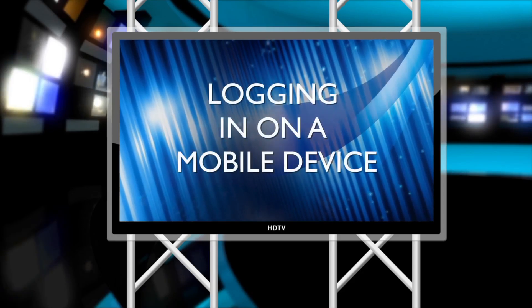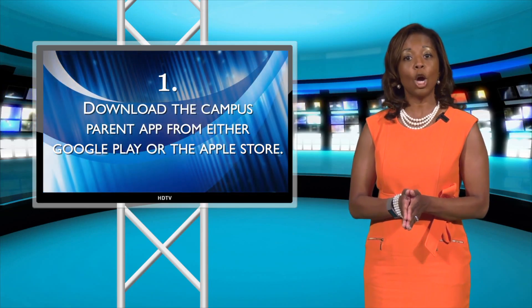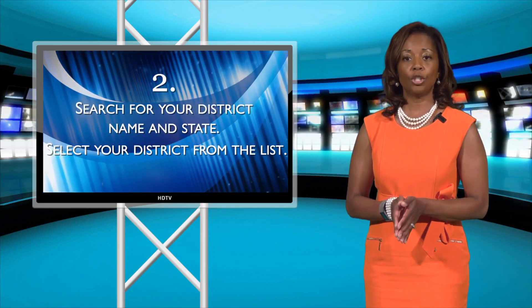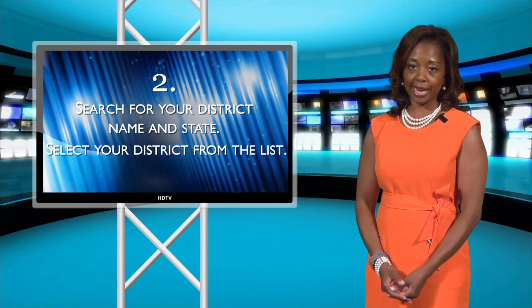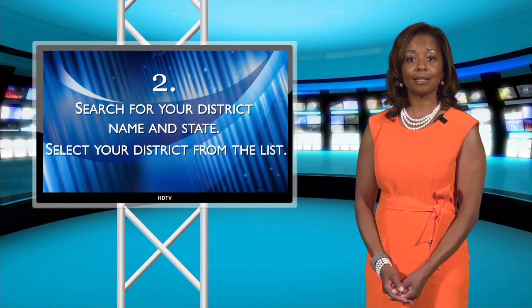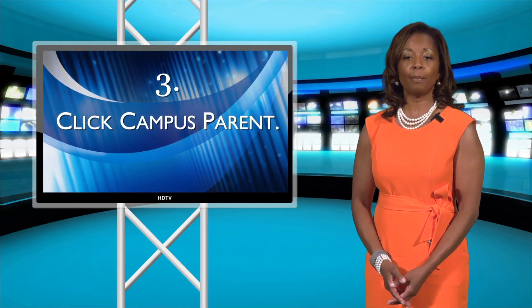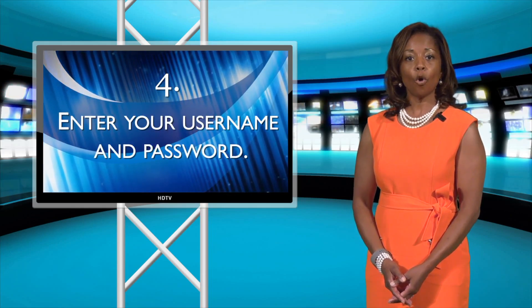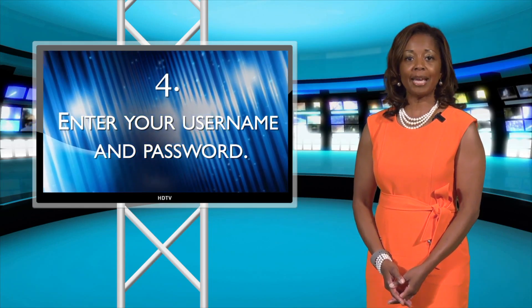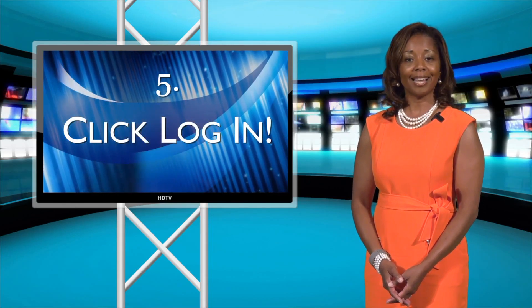If you're logging in on a mobile device: One, download the Campus Parent app from either the Google Play or Apple Store. Two, search for your district name and state, then select your district from the list. Three, click Campus Parent. Four, enter your username and password. Five, click Login.